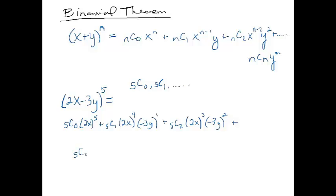Plus 5 choose 3 times 2x quantity squared times negative 3y quantity cubed, plus 5 choose 4.